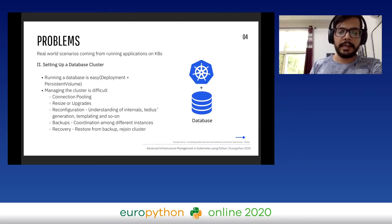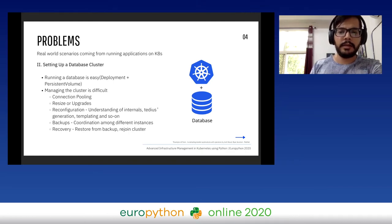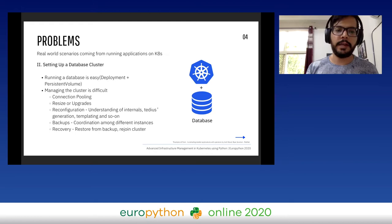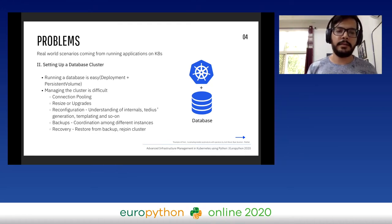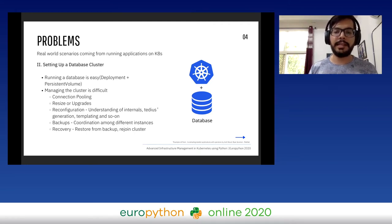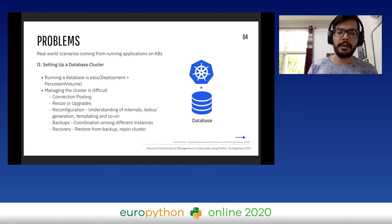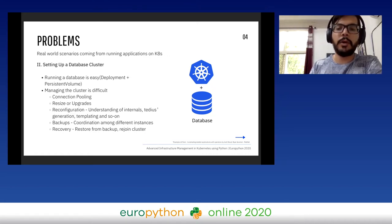A slightly more complex example: when you set up a database cluster — anything like Postgres or MongoDB — running a database is actually easy. You write a deployment spec, define a persistent volume, and claim that volume into the deployment. However, managing that cluster over time is difficult. You need to set up connection pooling, manage resizes or upgrades, and take care of reconfiguration, which requires operational expertise. For Postgres, you need to know its internals. There are also problems with backups and recovery, which need an infrastructure operator to do all these things manually.